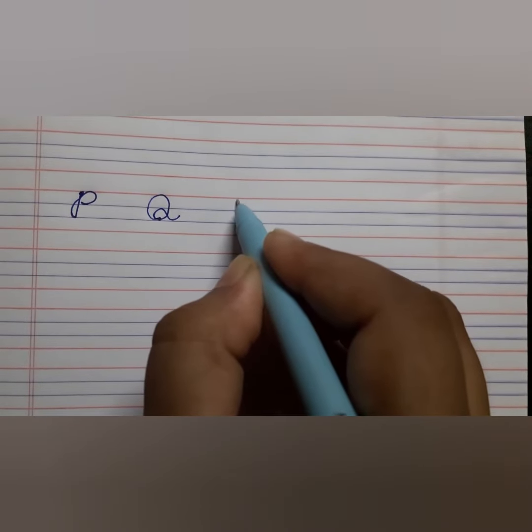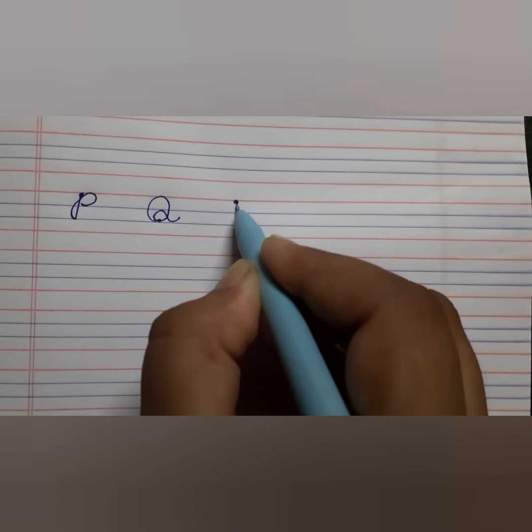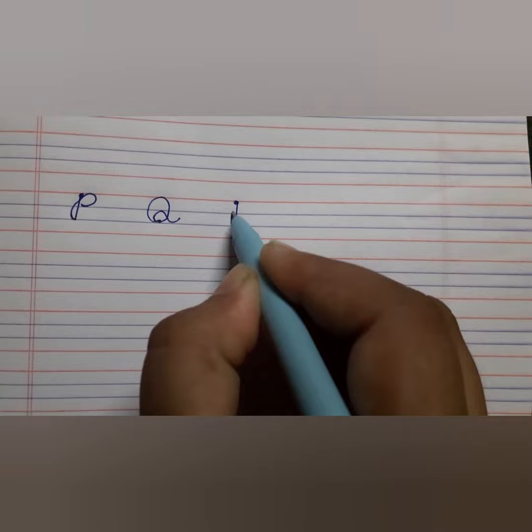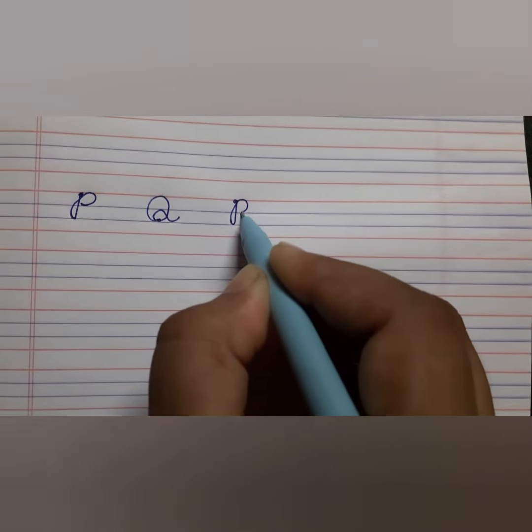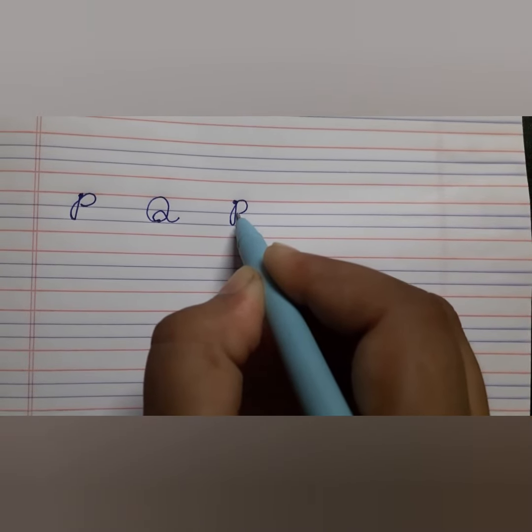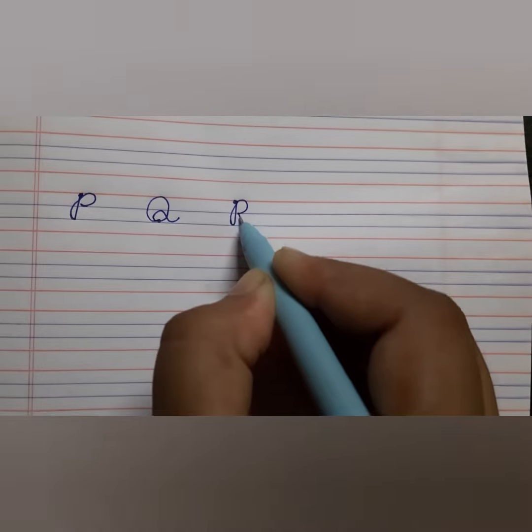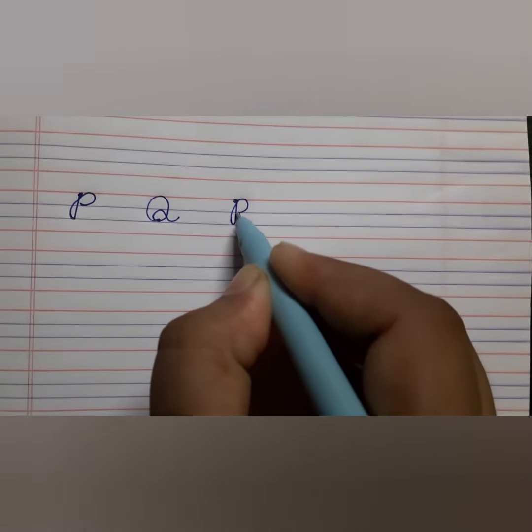Next for R, just like P from the first line come down to third line, left turn. This is up to P and then come down like this. This is R.